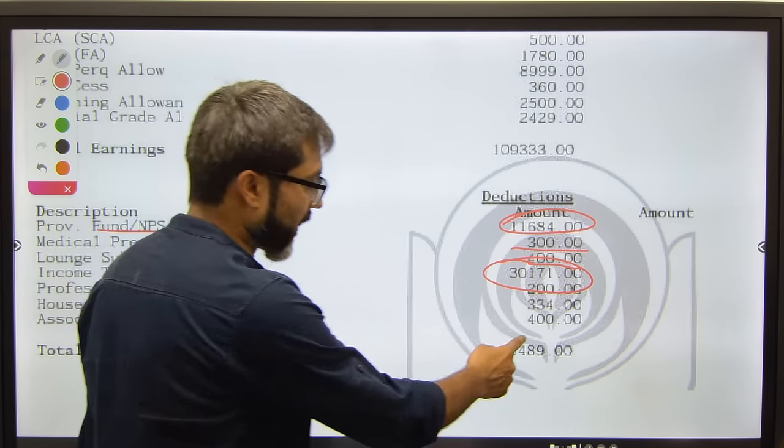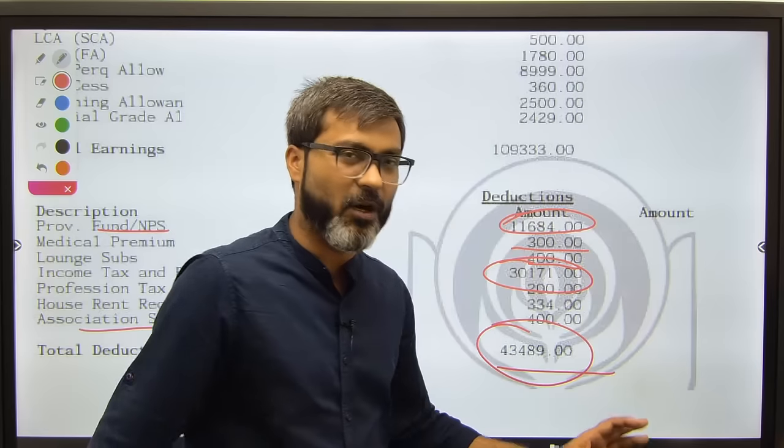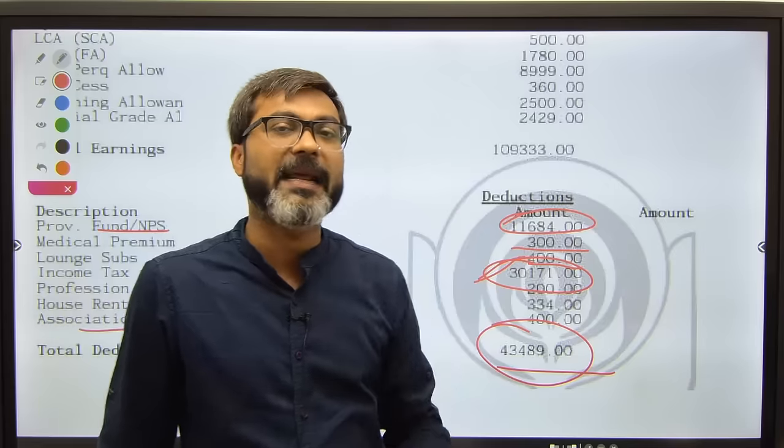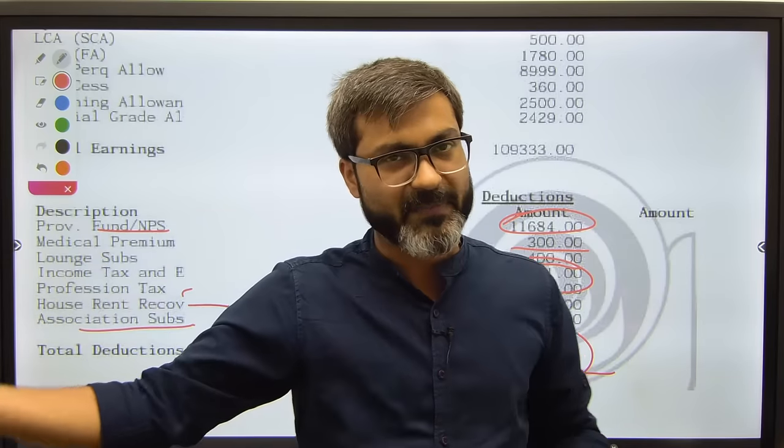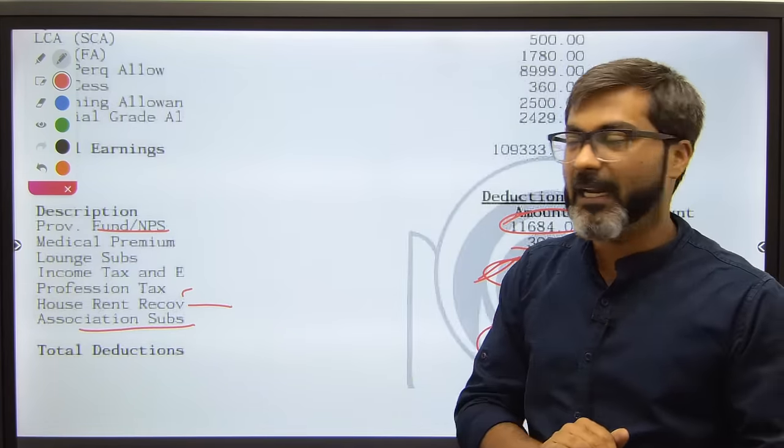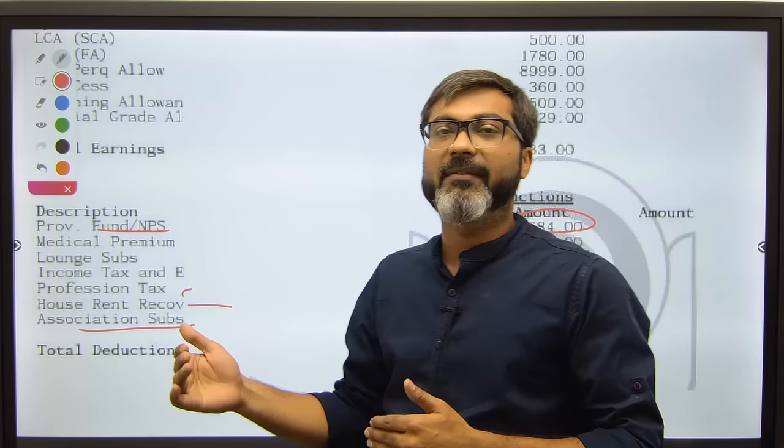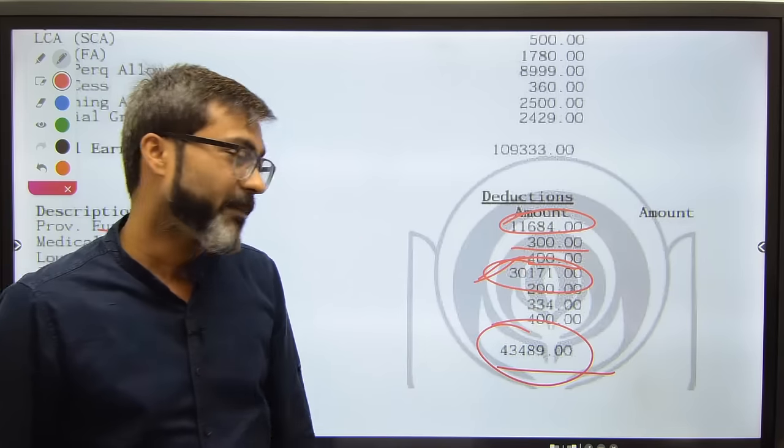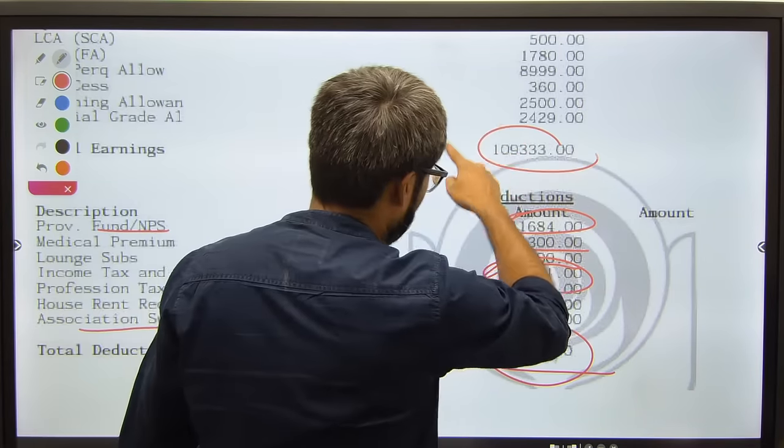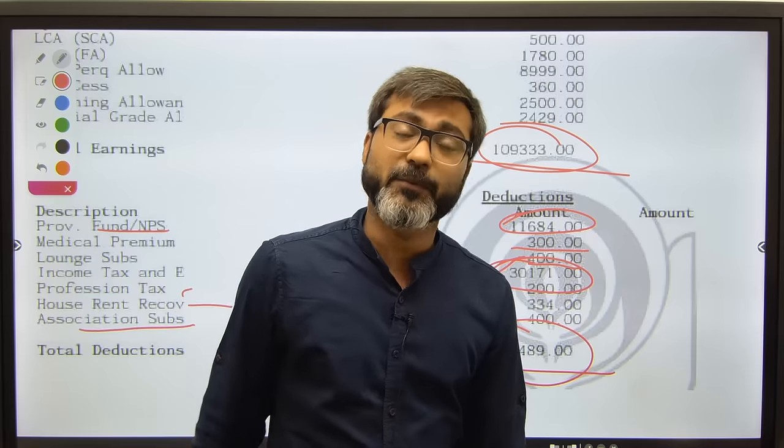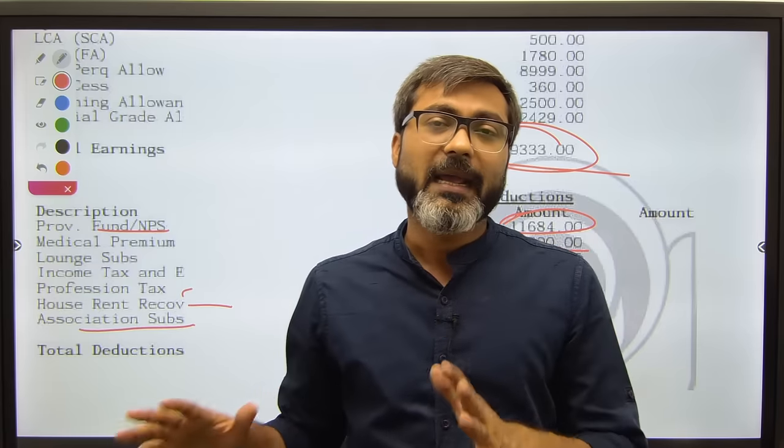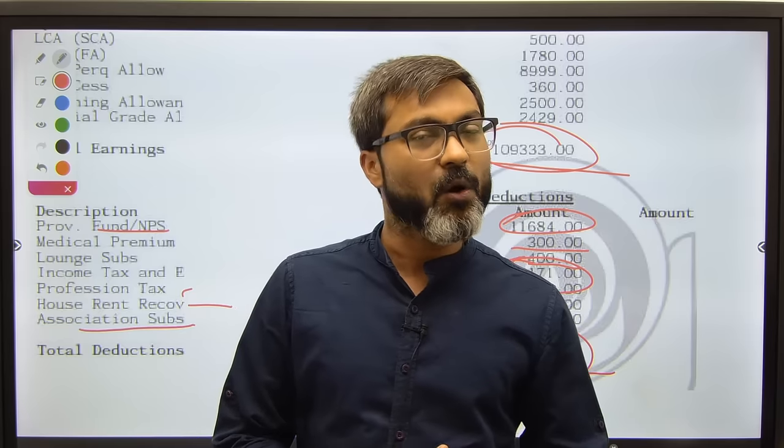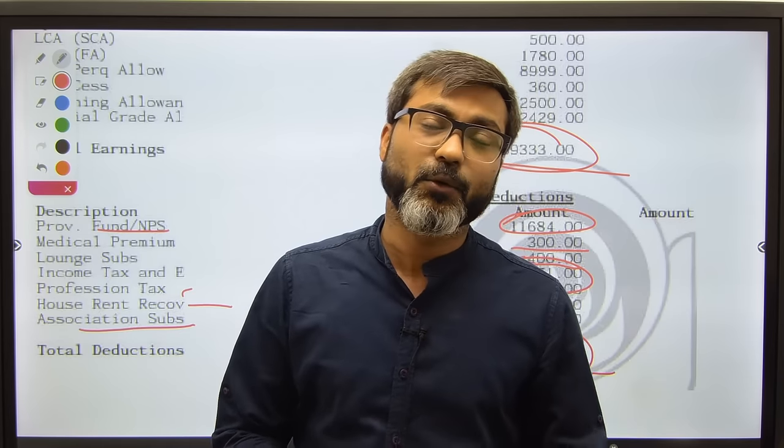Besides this, house rent recovery is three hundred and thirty-four, and association subscription is four hundred rupees. So here your total is showing forty-three thousand, but it's not actually forty-three thousand. It's because of this income tax - they have deducted the advance tax so they have to do less work later. Since this is for the month of July, in the beginning they deduct advance tax. So one lakh ten thousand rupees will be your salary. Now quietly sit and study, and please do not waste any more time. I know motivation sometimes goes down.